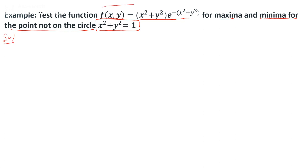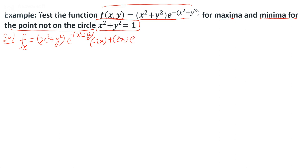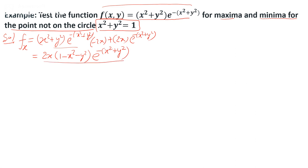The partial derivative of the function with respect to x becomes: (x²+y²)e^(x²+y²) · (-2x) + 2x · e^(x²+y²). When we simplify, this equation can be written as 2x(1 - x² - y²)e^(x²+y²). This is the partial derivative with respect to x.